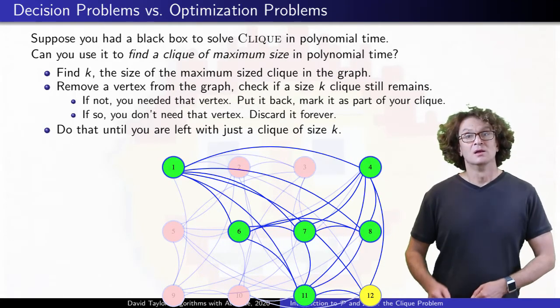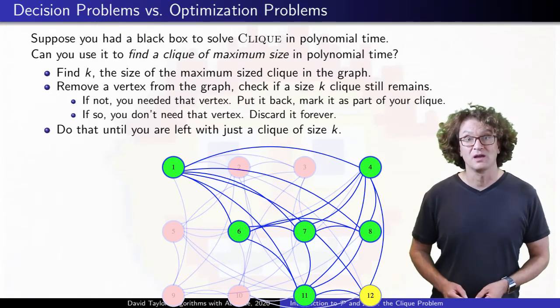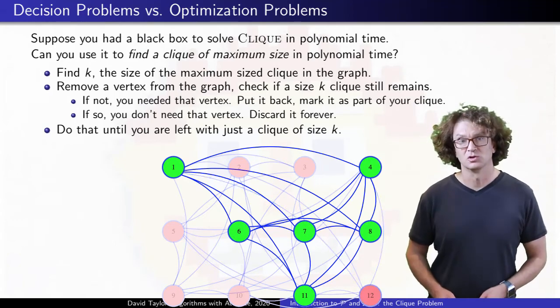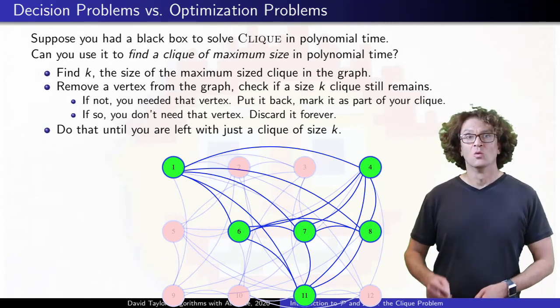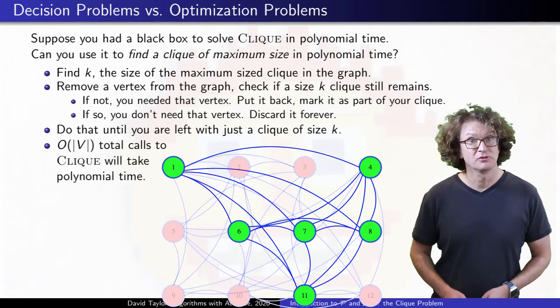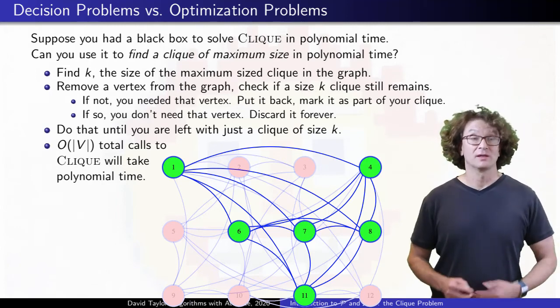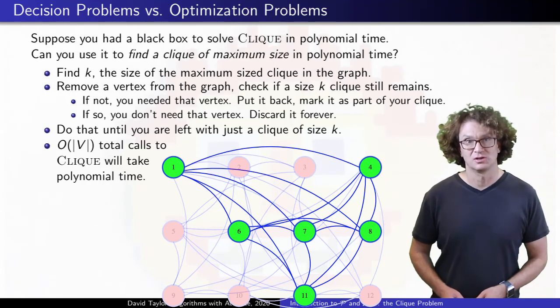When we keep 11, we now have 6 vertices marked, they must form a size 6 clique, but we could also just continue with the algorithm, which will tell us to toss vertex 12. We end up running that black box a linear number of times, and it takes polynomial time each, so that gives a slightly larger polynomial time algorithm to solve the optimization problem.